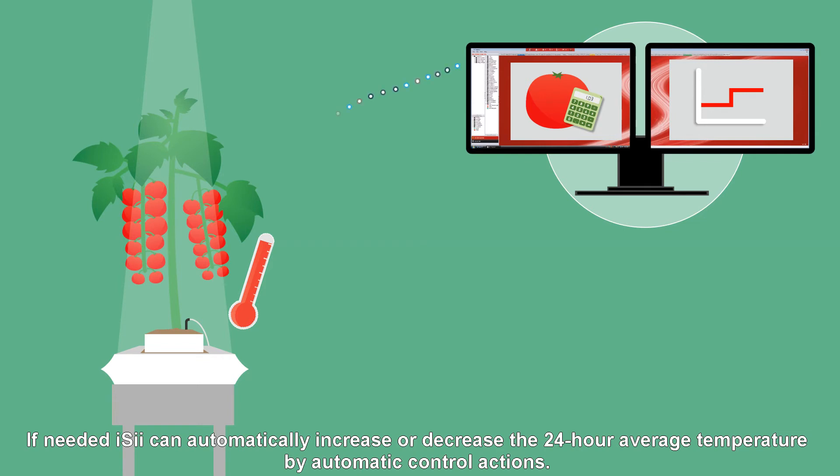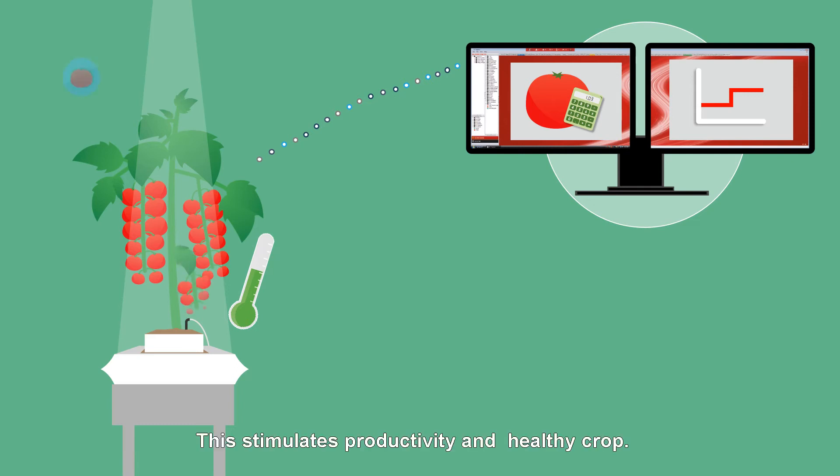If needed, EZ can automatically increase or decrease the 24-hour average temperature by automatic control actions. This stimulates productivity and healthy crop.